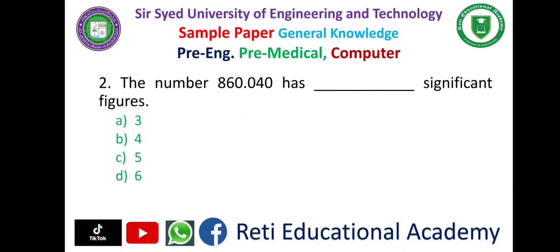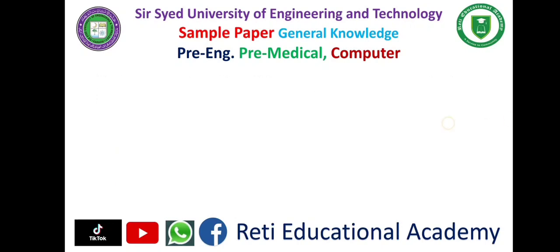Question number two: The number 60.040 has ___ significant figures. A. Three, B. Four, C. Five, D. Six. The correct answer is D: six.